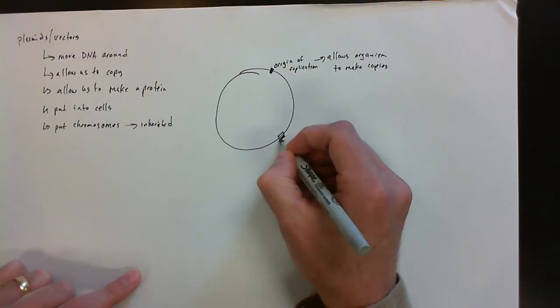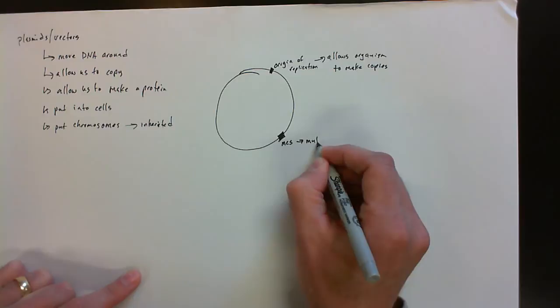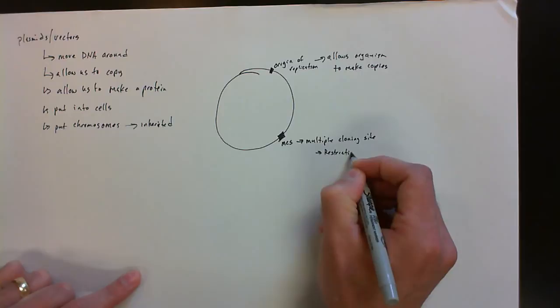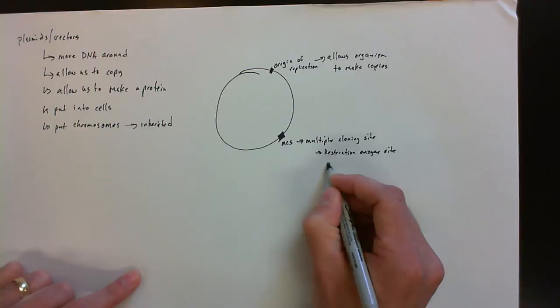They will also typically have, or should have, because these are designed, have what we call an MCS. This is defined as a multiple cloning site. This will consist of a bunch of restriction enzyme sites. And what this is going to allow us to do is insert our piece of DNA that we're interested in.